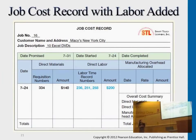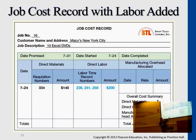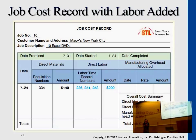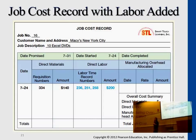In terms of representing the information on the job cost record, remember each job order has a specific record that keeps track of each category of cost. We talked about direct materials earlier, and now we've added direct labor cost. Assuming that assembling ten sets of Excel DVDs costs $200 to hire — adding these two together, it accounts for two-thirds of this job order. We have direct materials cost, and now we add in direct labor cost.